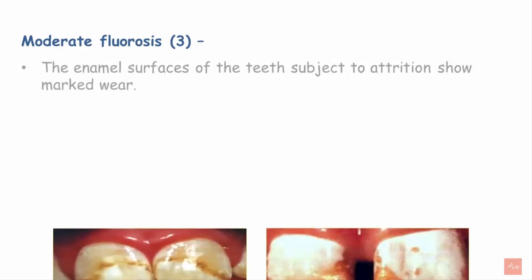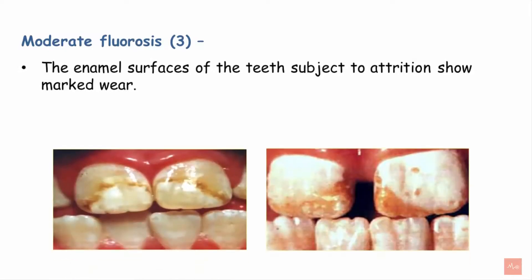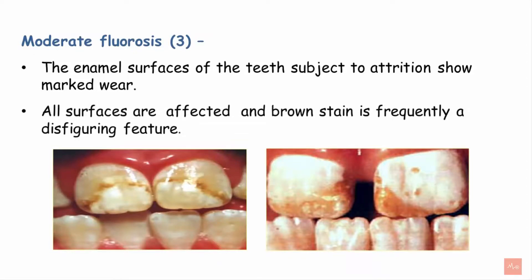Next is moderate fluorosis with a score of 3. Here, as seen in the images, the enamel surfaces of the teeth are subject to attrition and show marked wear. All surfaces are usually affected, and brown stain is one of the most frequent disfiguring features seen at this score.